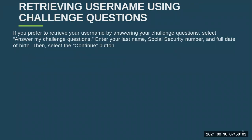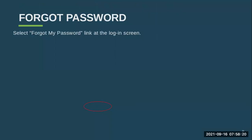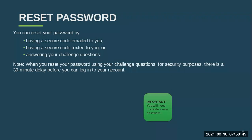Retrieving using challenge questions requires you to put in your social security number, birthday, and last name, then select continue. You'll answer your challenge questions and be taken to a page that displays your username. Forgetting your password works similarly — you'll reset it by providing your username, verified email address, phone number, and month and date of birth. You can have a secure code emailed or texted to you, or answer your challenge questions. It's important to know that if you use challenge questions for security purposes, there will be a 30-minute delay before you can log into your account.